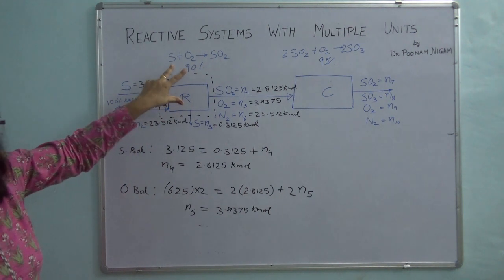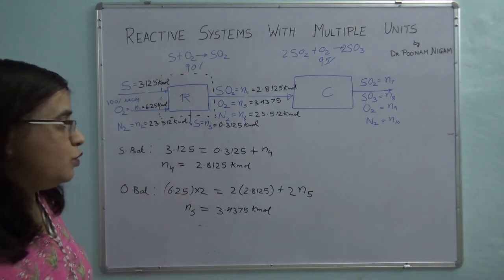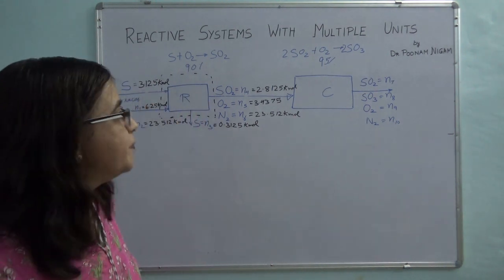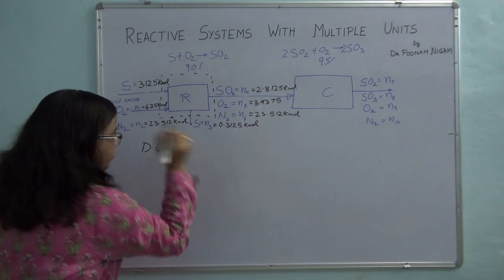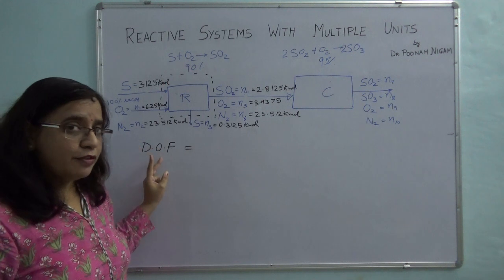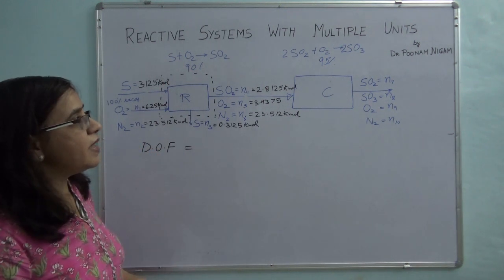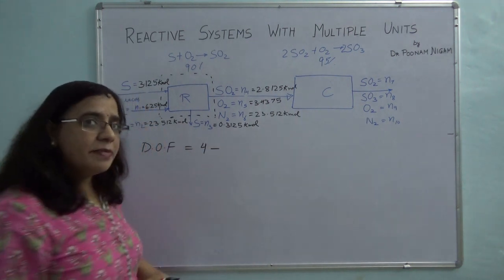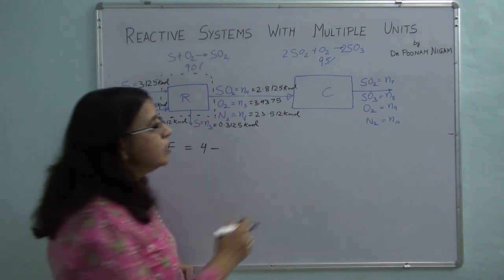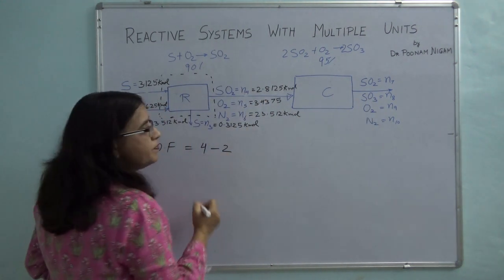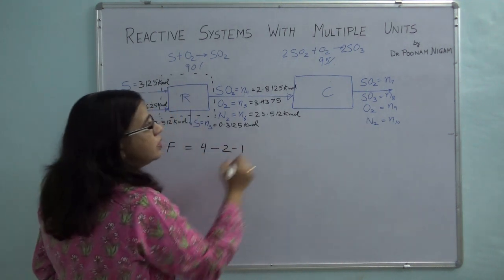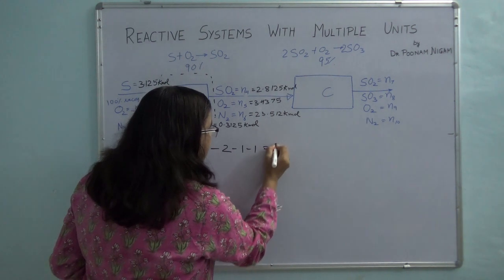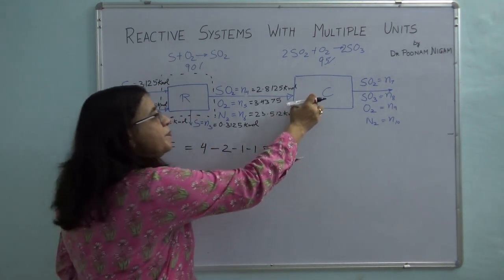Now I will solve on the converter. First checking degree of freedom for the converter using atomic species balance: 4 variables, 2 independent atomic species balances (sulfur and oxygen), 1 inert balance, and 1 process specification (95% conversion). So 4 minus 2 minus 1 minus 1 = 0. Degree of freedom is 0, so we can proceed.